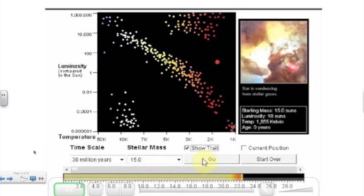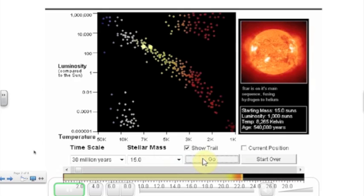Now we will look at a star that is 15 times as big as our Sun. That is a huge star. With a stellar mass of 15, the timescale now is 30 million years. We have a beginning luminosity of 1000 Suns. It is 1000 times brighter than our Sun. The temperature is 8200 Kelvin, and we are starting here on the main sequence.